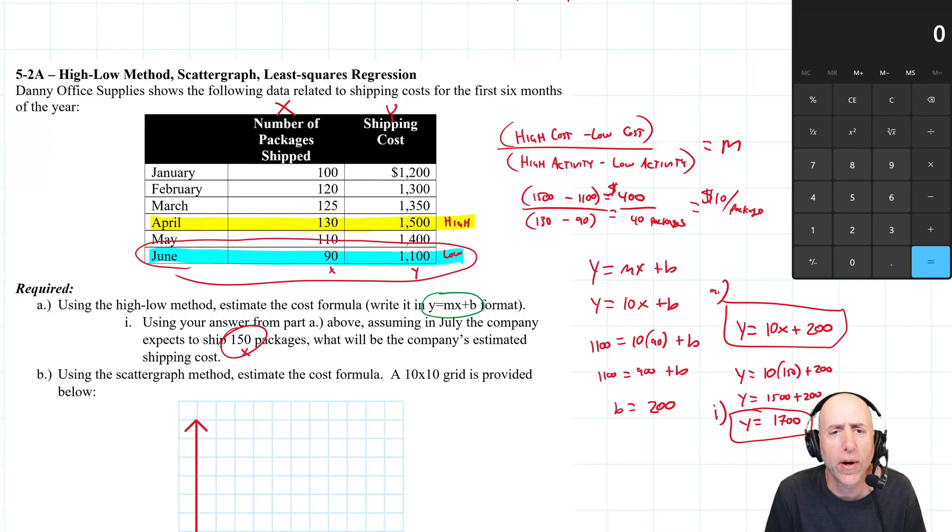Okay, we just worked through five to a doing the high-low method. In this part of the video, we're going to do the scatter graph method. So it says using the scatter method estimate the cost formula. A 10 by 10 grid is provided below.